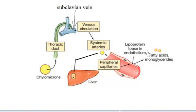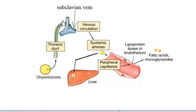Let's look at it in more detail. This is your chylomicron — it entered the lymphatic vessel. That lymphatic vessel will eventually collect and drain into the thoracic duct, which is the major lymphatic vessel. The thoracic duct will enter the circulation right here at the subclavian vein, and that subclavian vein will enter into the heart.